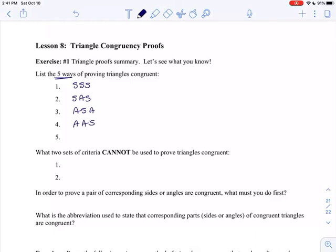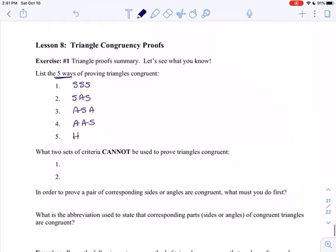Side, Angle, Side. Angle, Side, Angle, or Angle, Angle, Side. Both have two angles in one side. It depends if the side is between the two angles or not. And then hypotenuse leg. Remember, for hypotenuse leg, you have to have a right triangle. So you should know those five ways.